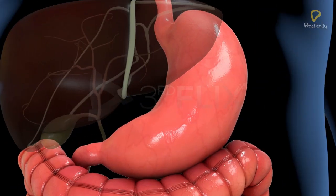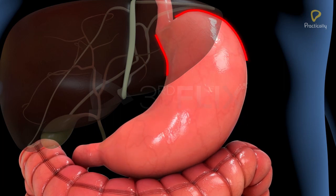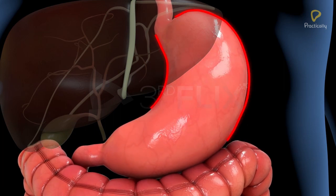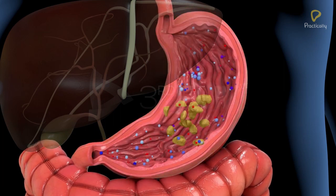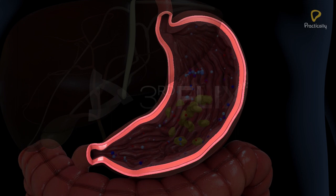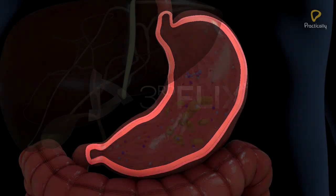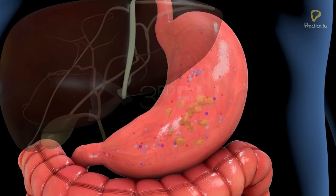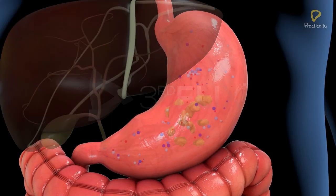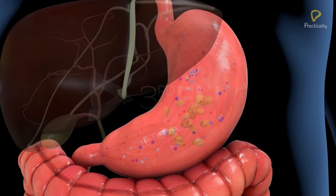The oesophagus opens into the stomach. The stomach is a J-shaped muscular bag-like structure. It has a thick muscular wall that helps in churning the food and mixing it with the enzymes.